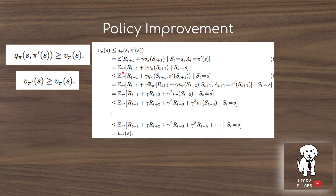This proof shows that if you update your policy to pi-prime for a current state, it will be better than the original policy pi for all states, because it is the same policy in every other way. Taking this greedy decision always makes the policy better and not worse, and this is an important property of the convergence of the GPI algorithm.